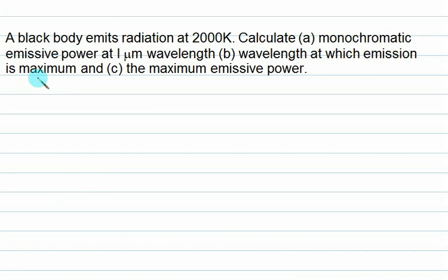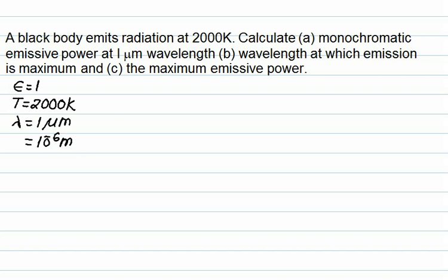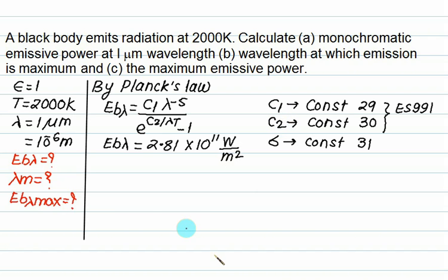Problem 1: a black body (epsilon equals 1) emits radiation at 2000 Kelvin. Calculate the monochromatic emissive power at wavelength lambda equals 1 micron, the wavelength at which emission is maximum (lambda_m), and the maximum emissive power. Using Planck's law with lambda equals 1 micron and T equals 2000 K, the answer for Eb_lambda is 2.81 times 10 to the power 11 Watt per meter square.